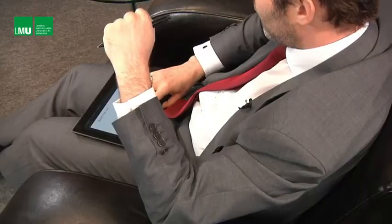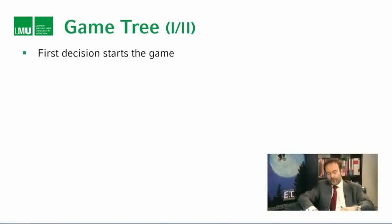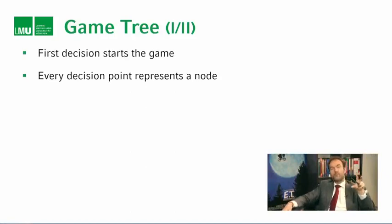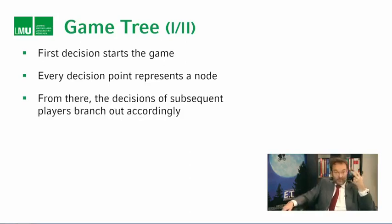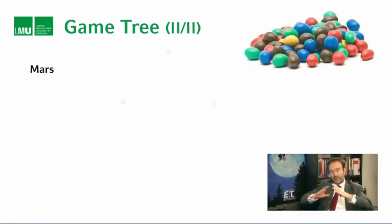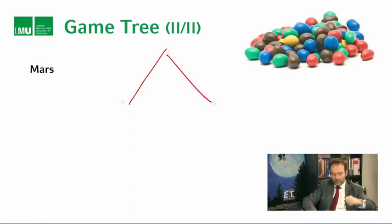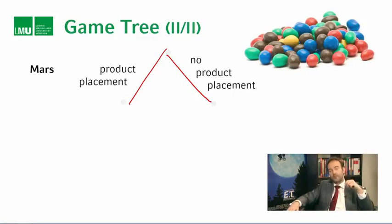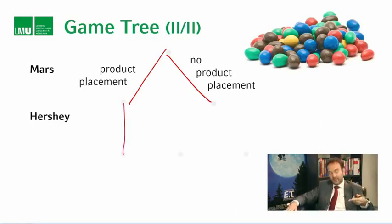So how do we draw this? We can't really draw a matrix, so how do we take into account sequential decisions? We draw what's called a game tree. A game tree has a property that the first decision point always starts the game; every decision point represents a node, and from that node decisions of subsequent players branch out accordingly. The first decision was Mars — they got the offer from Universal Studios and had the choice of placing their product or not.